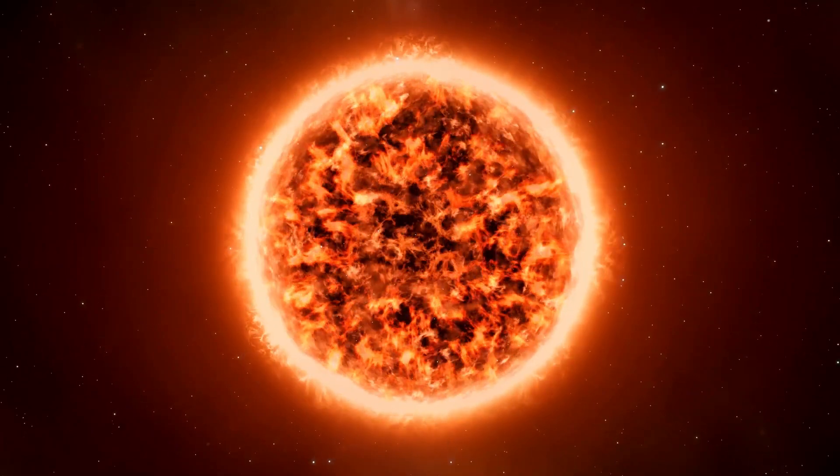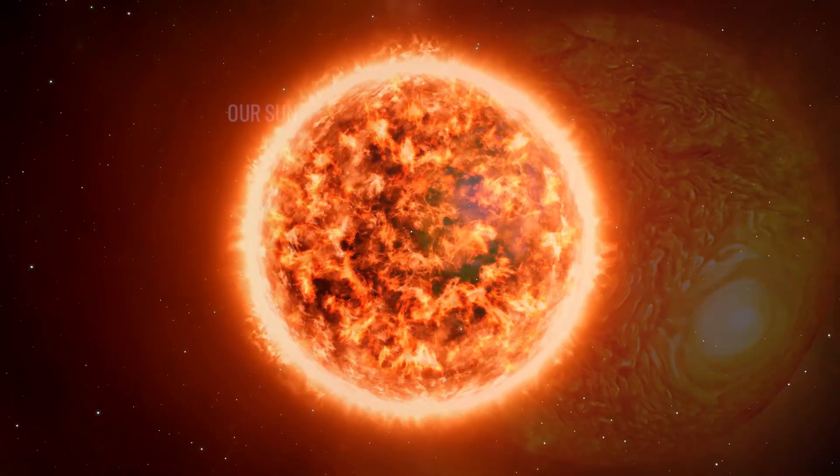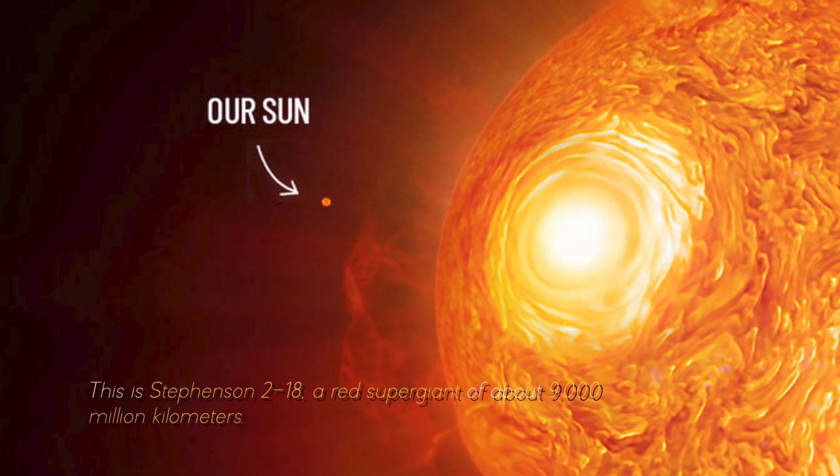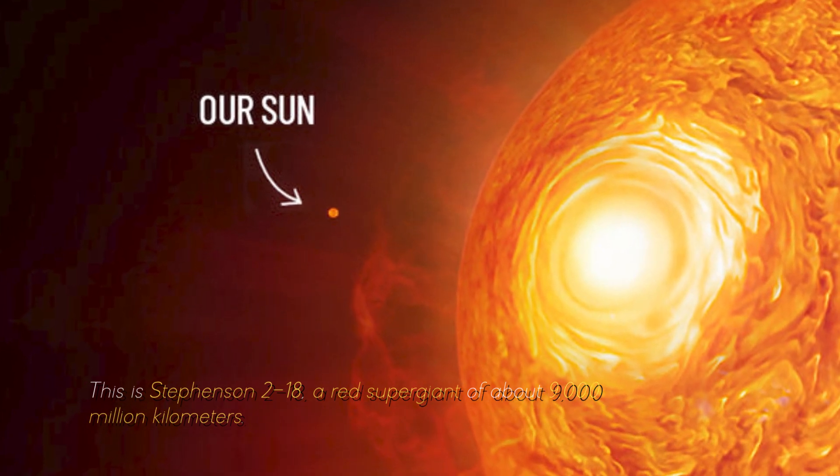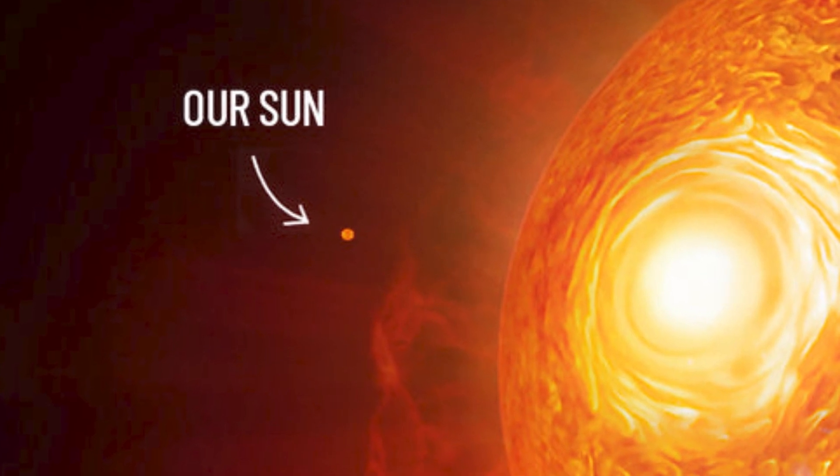Even our sun would also look small if we compare it with the largest star in the universe. This is Stevenson 218, a red supergiant of about 9,000 million kilometers, which looks like this in front of our star, something really spectacular.